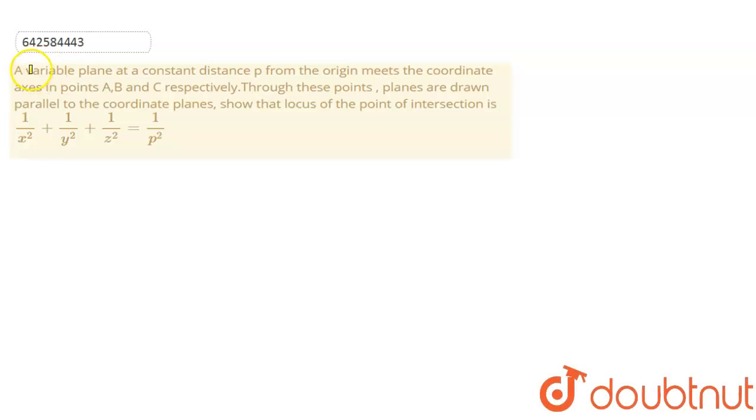Welcome to Doubtnut. So this is the question. A variable plane at a constant distance p from the origin meets the coordinate axis in points a, b and c respectively.